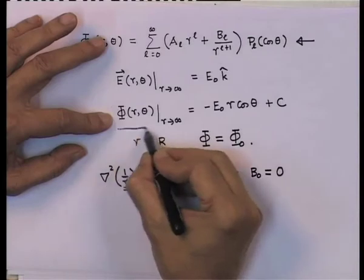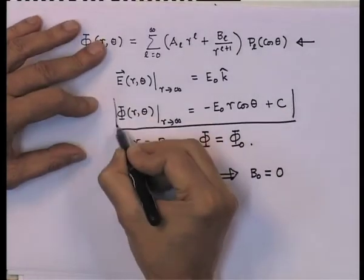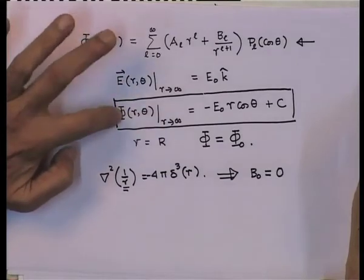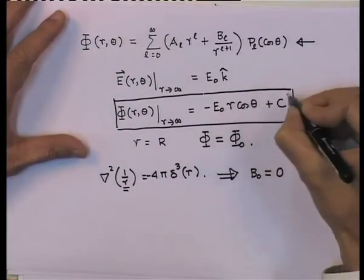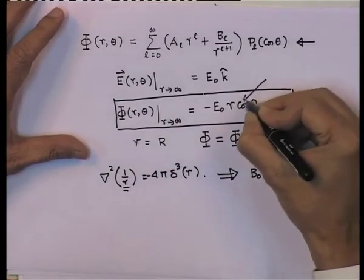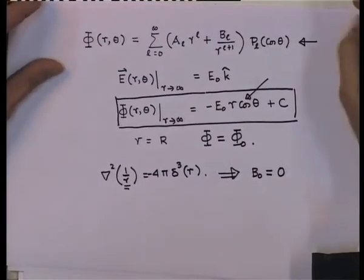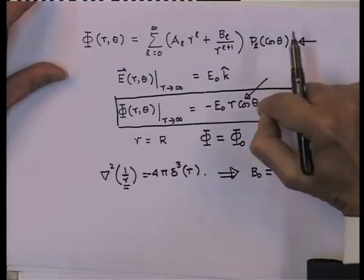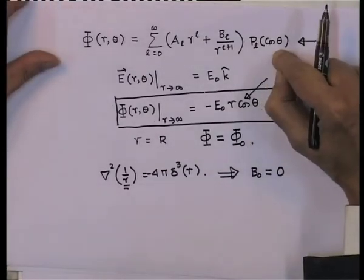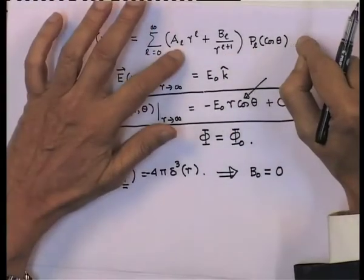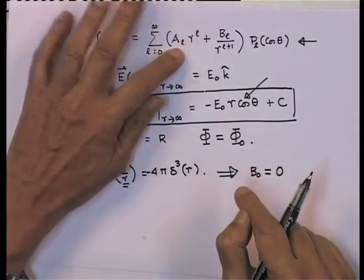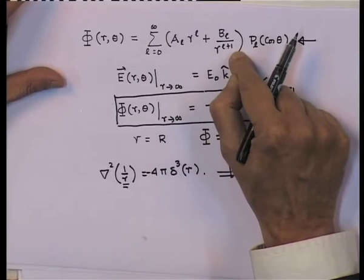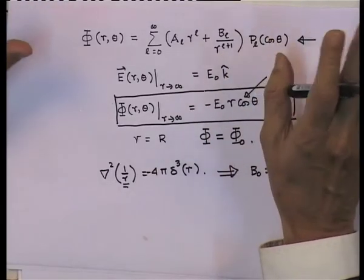The second thing we do is compare the asymptotic form of the potential at large distances. This expression has a term, other than a constant, that is proportional to cos theta. Since P_l of cos theta is a polynomial of degree l in cos theta, a simple cos theta corresponds to l equal to 1. So we start with a form which is a_1 r plus b_1 over r squared times cos theta, and we have already said the l equals 0 term is absent.